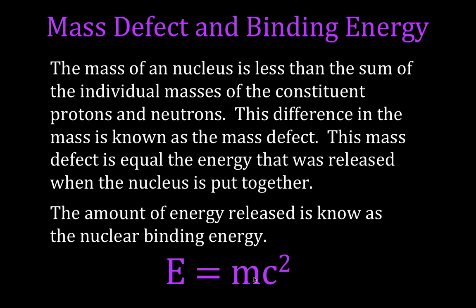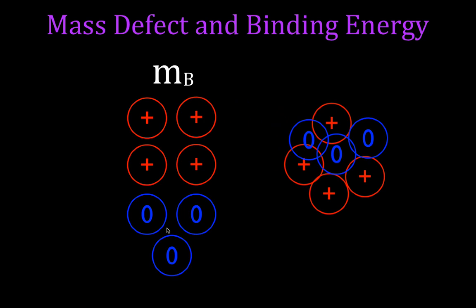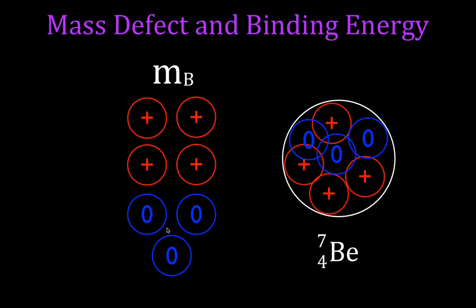For example, consider four protons and three neutrons. We add up their individual masses to get the mass before, then put them together in a nucleus. Four protons means beryllium, with mass number seven — beryllium-7. We can experimentally determine the mass of that nucleus via mass spectrometry to get the mass after. The mass before is greater than the mass afterwards, and the difference is the mass defect.